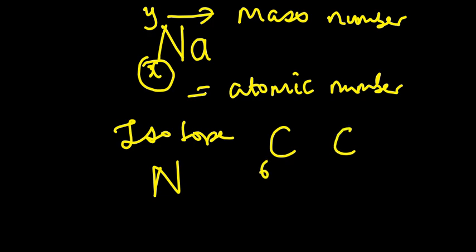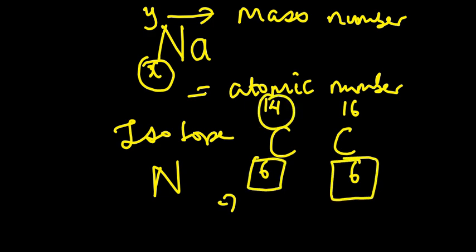Let's take, for instance, this is 14, maybe 16 and so forth. So what happens is that for an isotope, they're going to have the same atomic number, which is the proton number, but they'll have different mass numbers by virtue of them having different numbers of neutrons in that particular nucleus. That's what causes them to have different mass numbers.